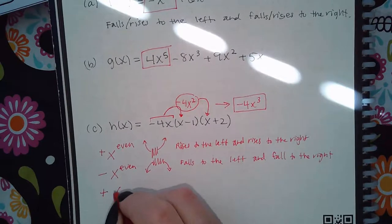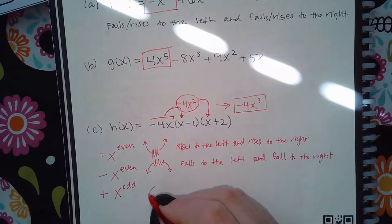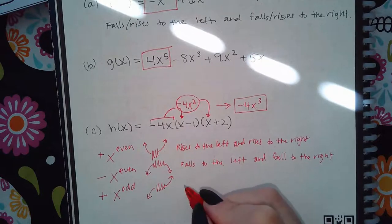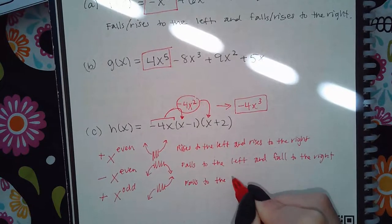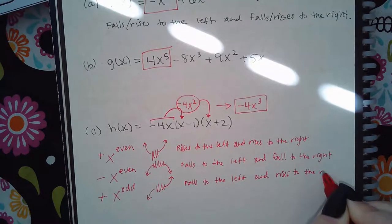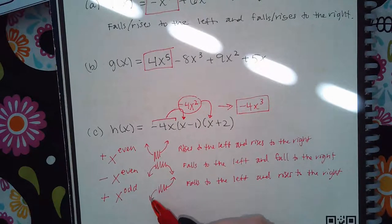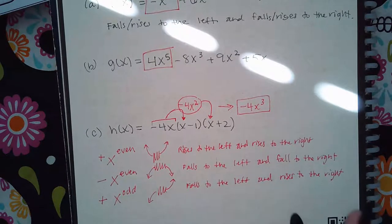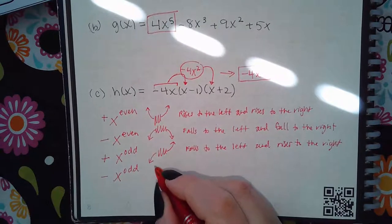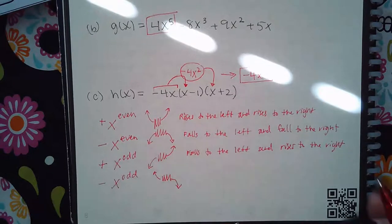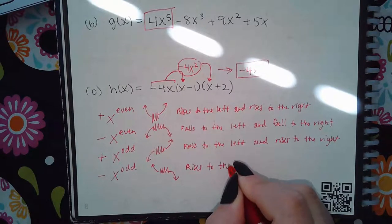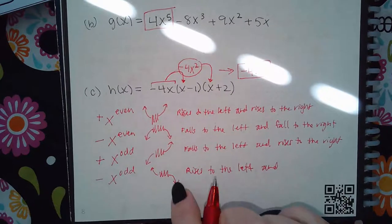If I have a positive X to an odd exponent, it looks like a cubic — going down on the left and up on the right. So it falls to the left and rises to the right. The last possibility is a negative coefficient with X to the odd power — it's the reverse. We don't know what's in the middle, but to the left it rises and to the right it falls.